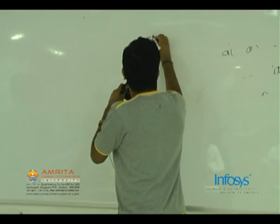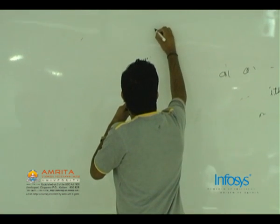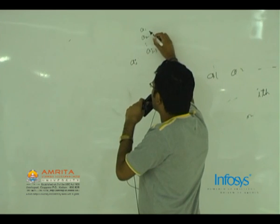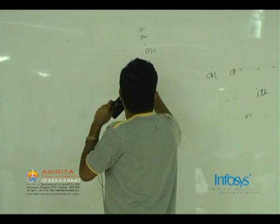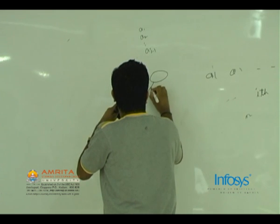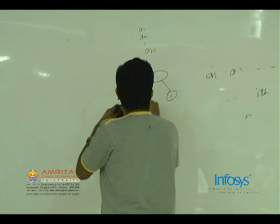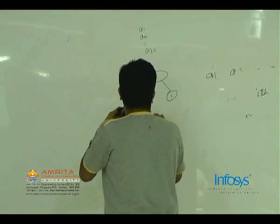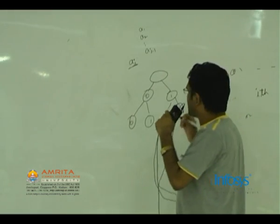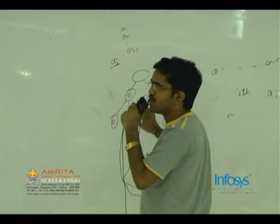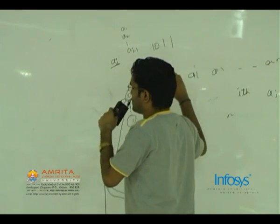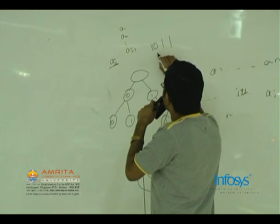If you consider number aᵢ and all numbers before it — a1, a2, ..., aᵢ₋₁ — we keep the bit representations of a1 through aᵢ₋₁ in the trie. Before processing aᵢ, say its representation is something like 1011, then we need to find the corresponding number whose XOR with it is maximum.